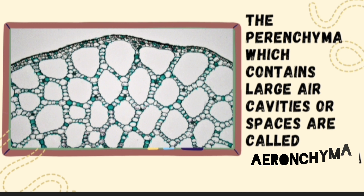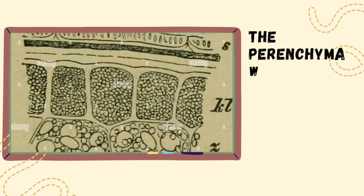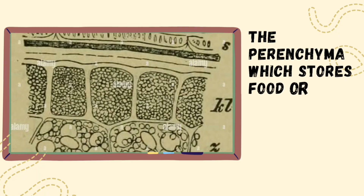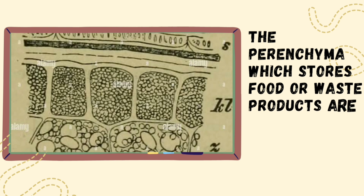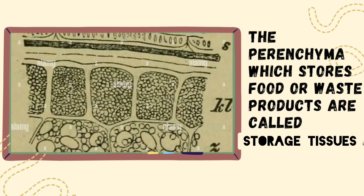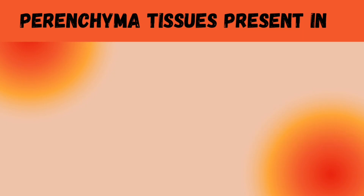The parenchyma which stores food, water, or waste products is called storage tissue. Parent parenchyma tissues store food materials, water, and waste products. Storage tissues are present throughout the plant body — in leaves, fruits, and flowers.